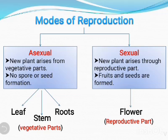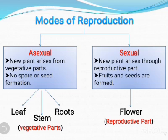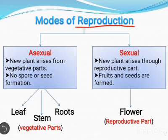As we all know, all living things reproduce more of their own kind. The process through which a living organism produces new living organisms or their young ones like itself is called reproduction. Or we can say, reproduction is a process of production of new individuals from their parents.